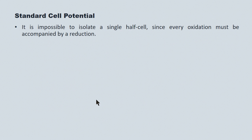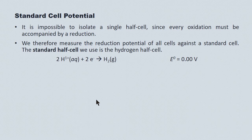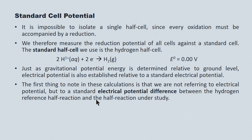It's impossible to run a half-reaction in isolation. Every oxidation must be accompanied by a reduction. So we measure the reduction potential of all half-cells against the standard half-cell, and the standard half-cell we use is the hydrogen half-cell, assigned an electrical potential of zero volts by international agreement. Just as gravitational potential energy is determined relative to ground level, electrical potential energy is established relative to this standard half-reaction. In these calculations, we're not referring to electrical potential, but to electrical potential difference between the half-reaction under study and this hydrogen half-reaction — so it's always a relative measure.